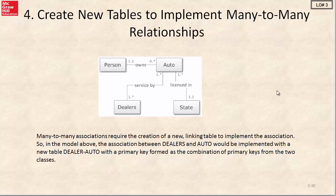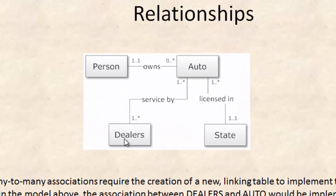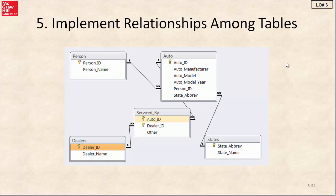Next, we have to deal with the many-to-many association between automobiles and dealerships. The maximum next to dealers is many and the maximum next to autos is many. In this case, we need to create a new table to allow those two to be linked up. I've implemented the many-to-many relationship by creating a serviced-by table. The primary key of this linking table is the combination of the auto ID and dealer ID, and it sits right between the dealers and the automobile tables. This slide also shows you the relationship screen from Access implementing our database.